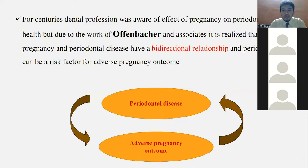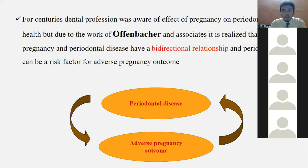Offenbacher is the most important authority. In 1996, Offenbacher introduced the terminology called periodontal medicine. After his first study, he and his associates realized that pregnancy and periodontal disease have a bi-directional relationship, and that periodontal disease would be considered a risk factor for adverse pregnancy outcomes.